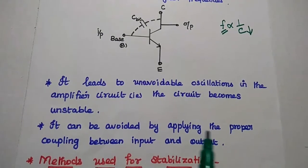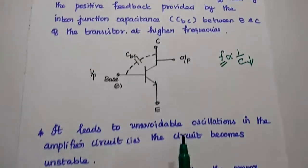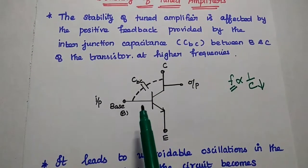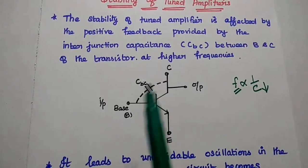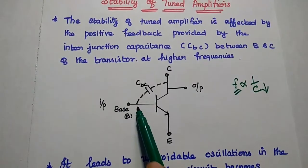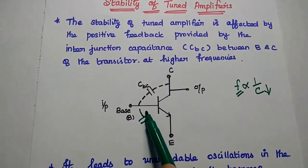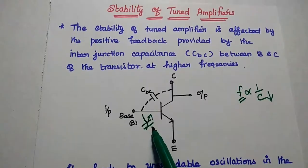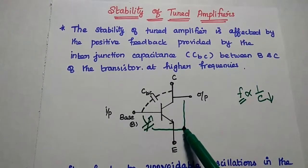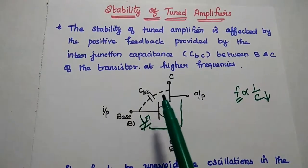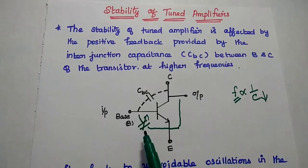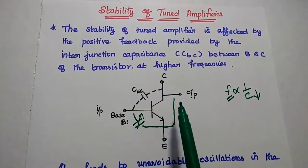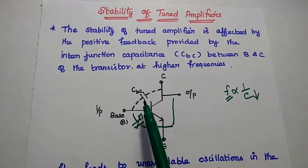This can be avoided by applying proper coupling between input and output. There is an unwanted positive feedback provided to the base, and we have to avoid this signal. We introduce one external variable capacitance which is equal in magnitude to the CBC and opposite in phase, from the output side to the input side, so that both cancel each other.